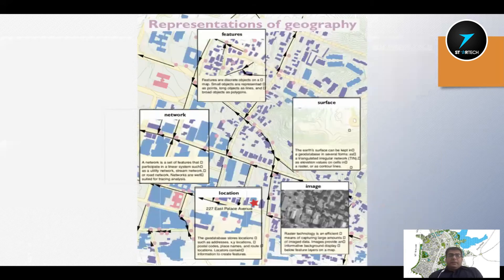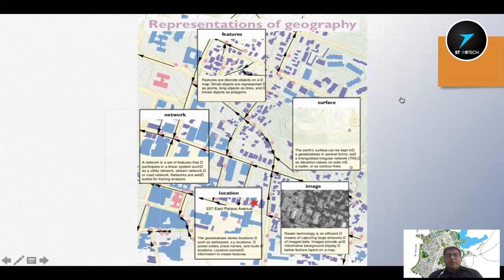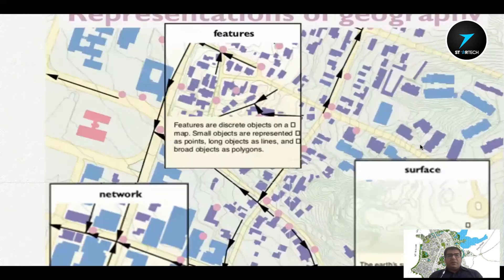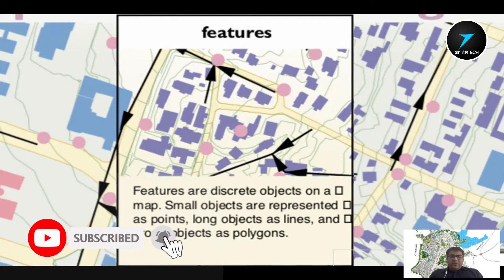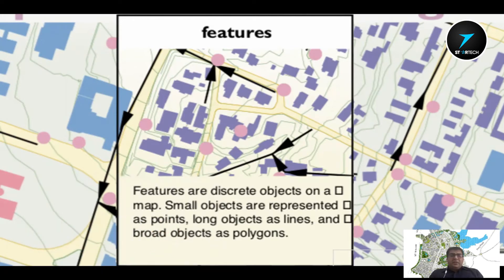How do we represent the real world in features? For example, a discrete object on the map — we can display it as line points or polygons. In our GIS environment, our object's digitizing or storing is typically two-dimensional. Usually when we store line points or polygons, we have two-dimensional objects, though three-dimensional representation is also possible.